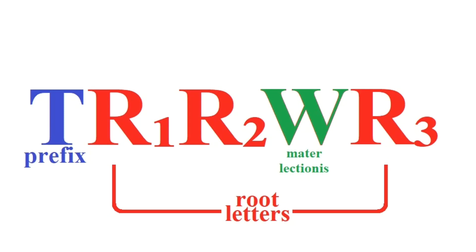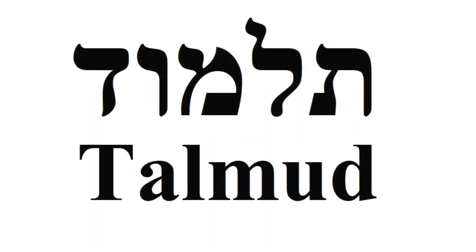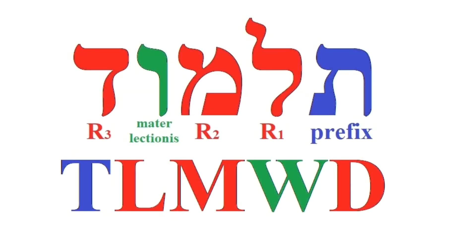With that basic structure in mind, let's return to the Hebrew word Talmud. The base root is lamed-mem-dalet, the equivalent of LMD, which I've marked in red on your screen. And then you have the tau at the start — the aforementioned T-prefix, marked in blue. And this is an example of a verbal noun that includes a mater lectionis, in this case a wa, marked in green.